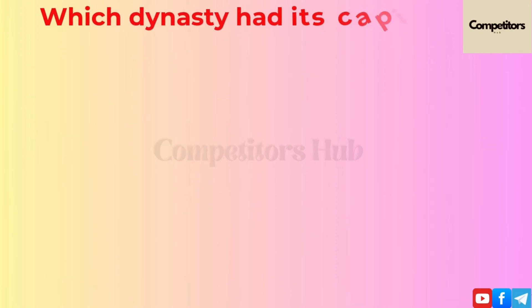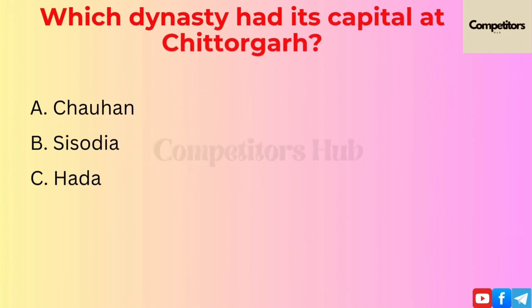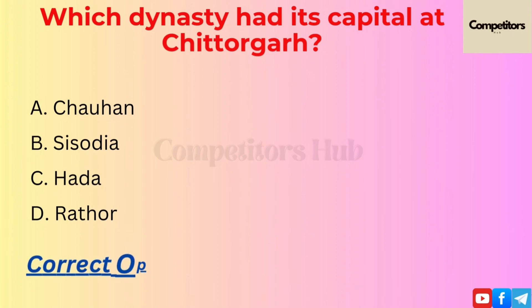The next question is: which dynasty had its capital at Chittorgarh? Option A: Chauhan. Option B: Sisodia. Option C: Hada. Option D: Rathor. The correct option is B, Sisodia.